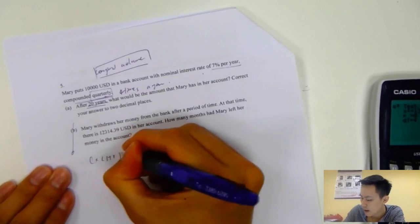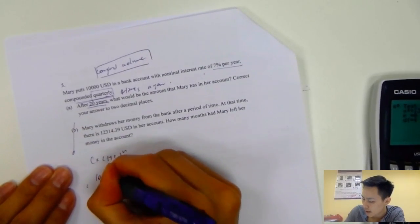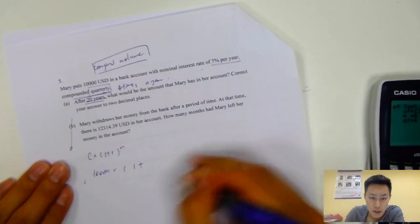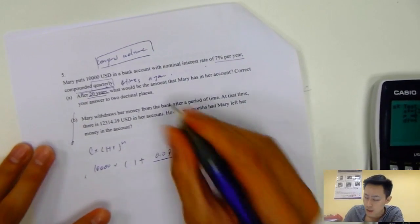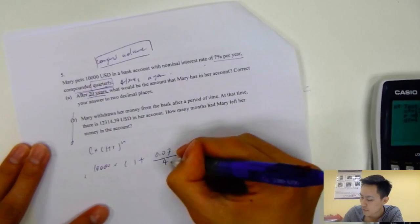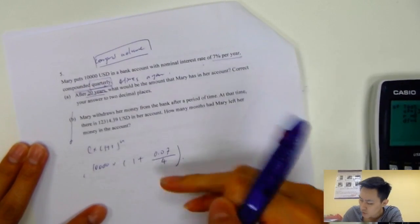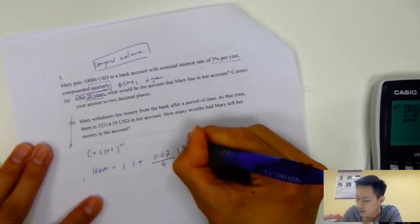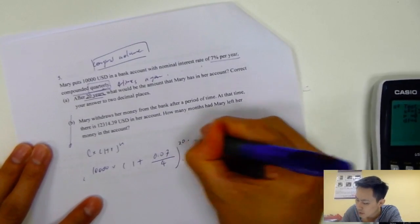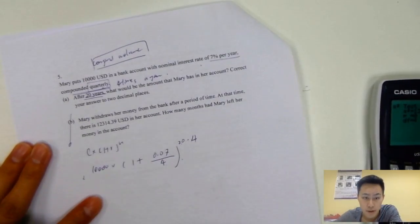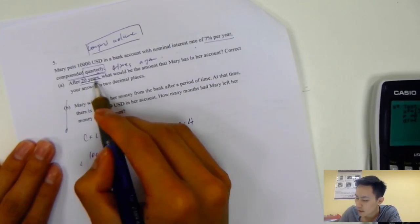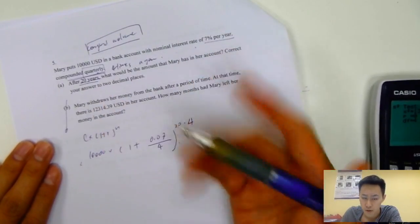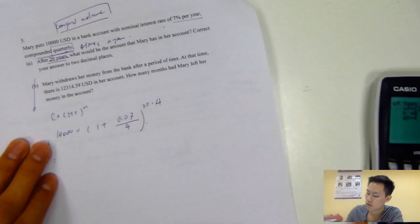After 20 years, you can apply the equation again: c times 1 plus r power n. Capital 10,000, times 1 plus r. Many students would just write 0.07, but that's wrong because compound quarterly. Quarterly means divide by 4. Always remember that. The power n here is not just 20. You have to multiply that by 4. Why? Because 1 year, you'll have 4 times. 20 years, you'll have 80 times.